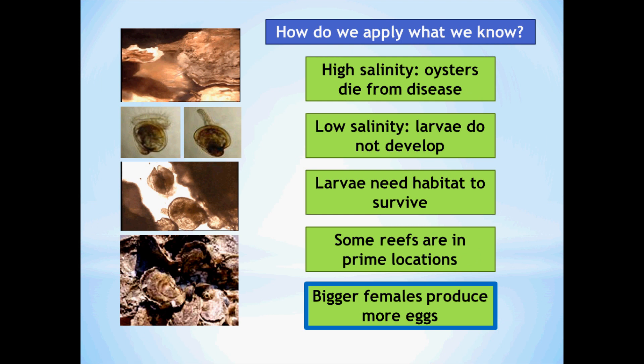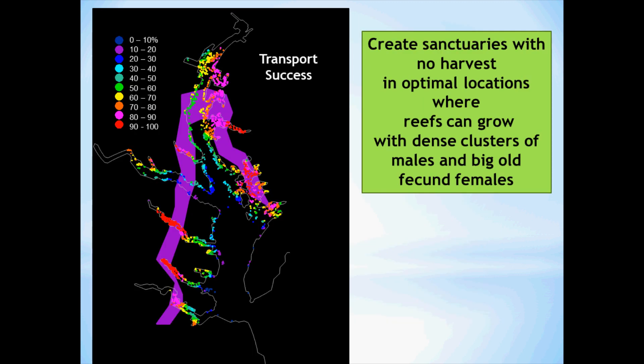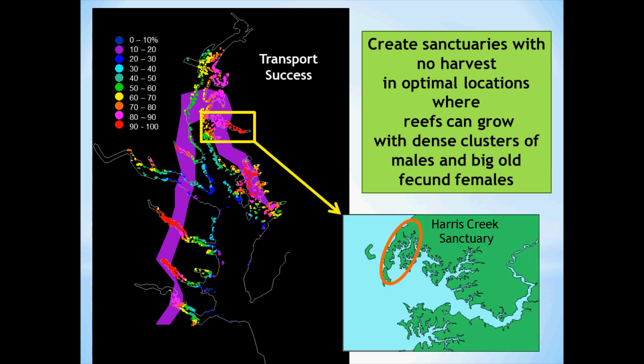We also know that bigger females produce more eggs. So how do we incorporate that into oyster restoration? We can create sanctuaries with no harvest at optimal locations, where reefs can grow with dense clusters of males and big, old, fecund females. The females will produce many eggs, the larvae will have a chance to develop in good salinities, and the adults won't be as susceptible to disease. Oyster sanctuaries are currently being located in these optimal areas — for example, the Harris Creek Sanctuary has all the characteristics of good population growth, and we hope that this and many other sanctuaries will help jumpstart oyster populations in Chesapeake Bay and restore them to thriving levels.